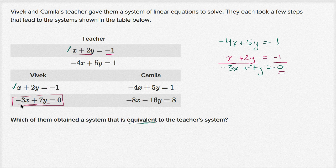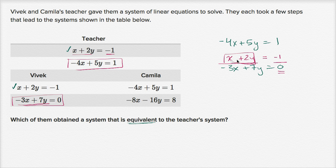This new linear equation represents a different line, but the resulting system is going to have the same solution. For an x-y pair that satisfies both equations — which is what a solution would be — x plus two y equals negative one. So for that solution, we're adding the same thing to both sides. Since x plus two y equals negative one for the solution, negative one is the same thing as x plus two y. So we're not changing the resulting solution of the system. What Vivek did is a completely legitimate operation, and in fact it's a technique we often use to eventually find the solution of a system.